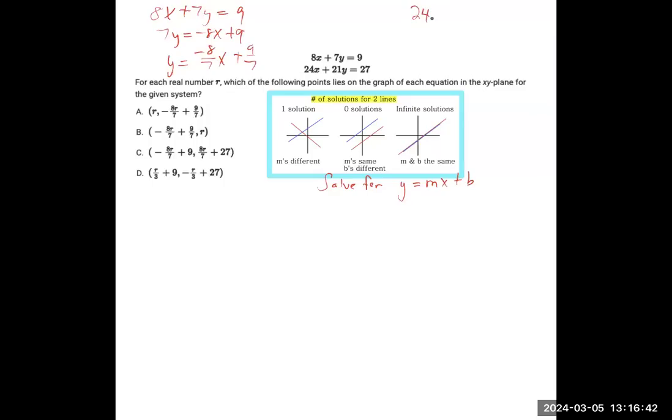Doing it for the bottom one. 24x plus 21y is 27. Take away 24x from both sides, divide by 21. Now if you divide this by 3, you'll get y is negative 8 over 7x. And if you divide this by 3, you'll get 9 over 7.